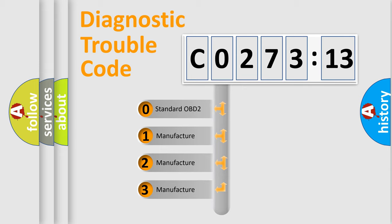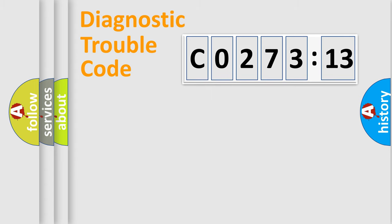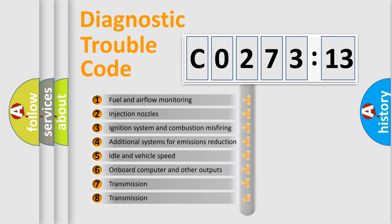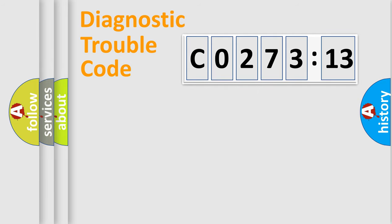If the second character is expressed as zero, it is a standardized error. In the case of numbers 1, 2, or 3, it is a manufacturer-specific expression of the car-specific error. The third character specifies a subset of errors. The distribution shown is valid only for the standardized DTC code.